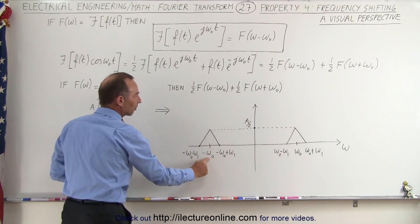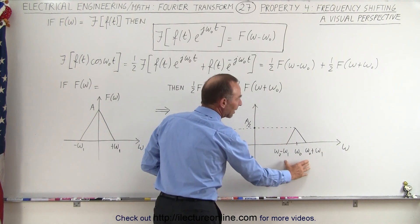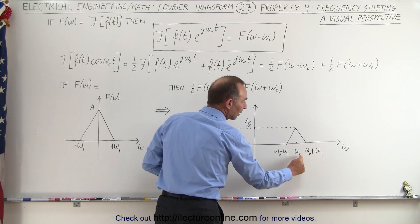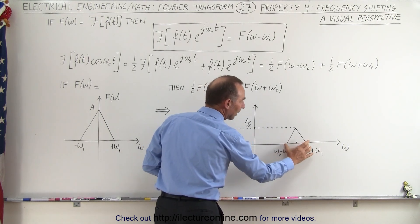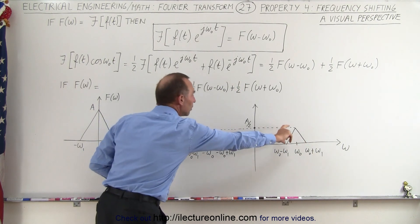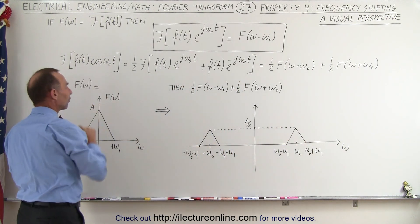But shifted to the left by omega sub zero. On the right the same thing again: the width here is still the same, it's omega sub not plus omega one to omega sub not minus omega one. Again that's the width here, but notice that the amplitude now is only half of what it was over here.